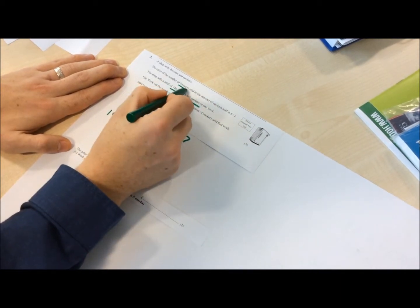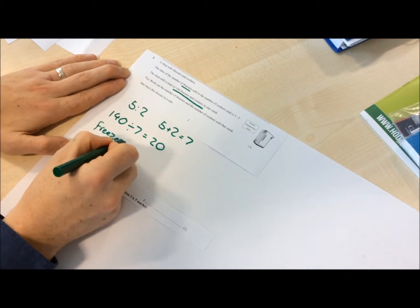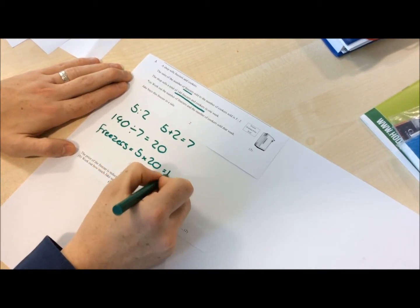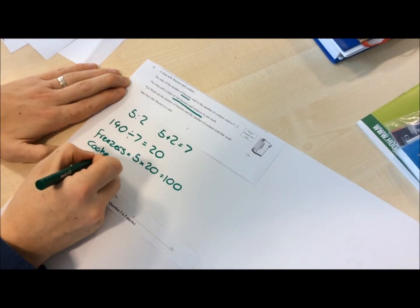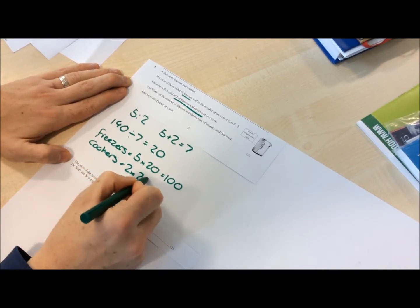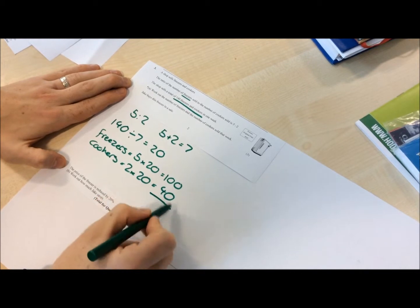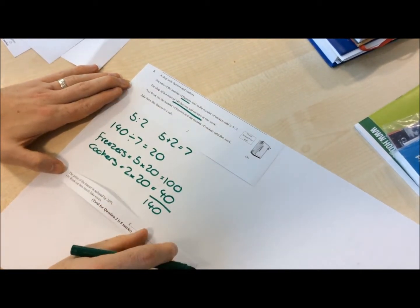5 parts goes to freezers, so they are 5 times 20 to give 100, and cookers gets 2 parts, so they are 2 times 20 to get 40. I can check by adding those together to see that they give me the total of 140.